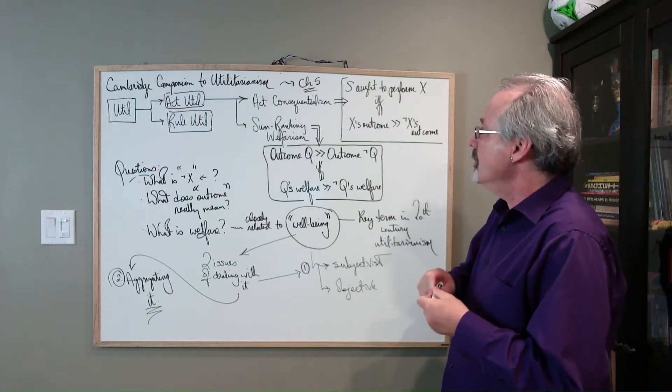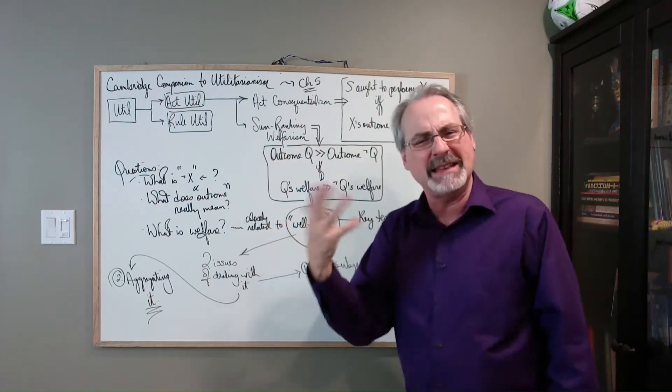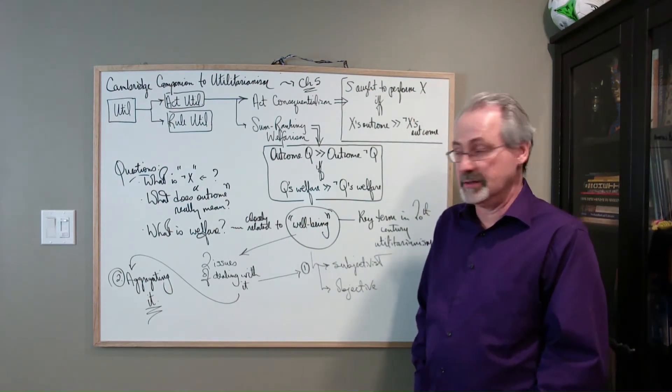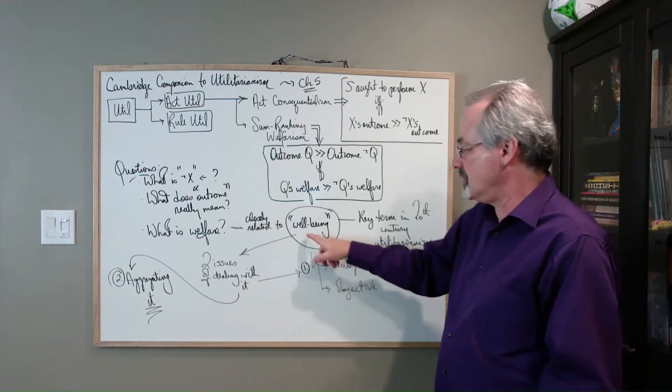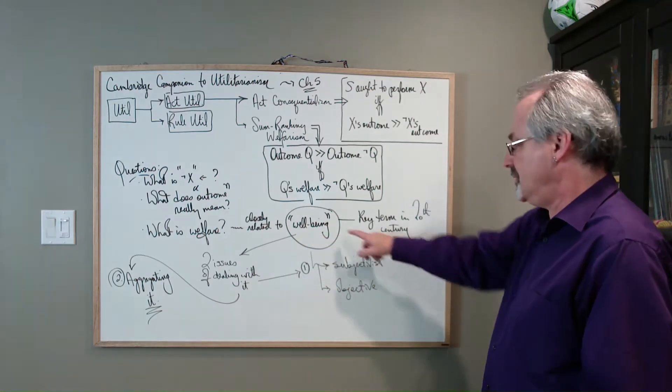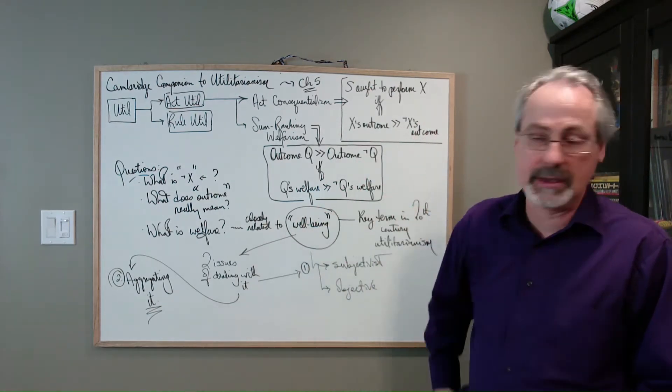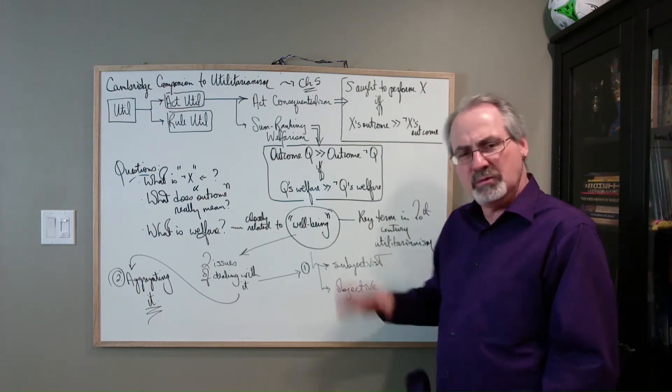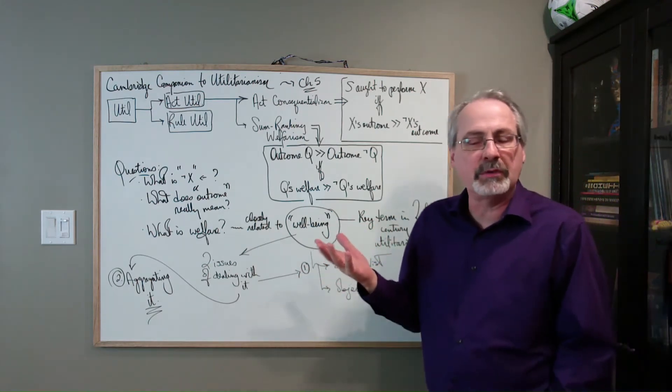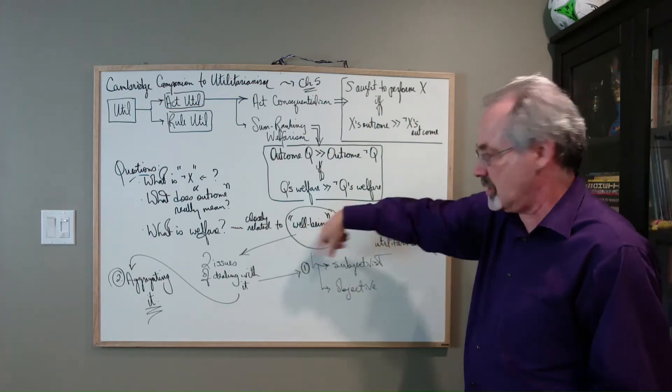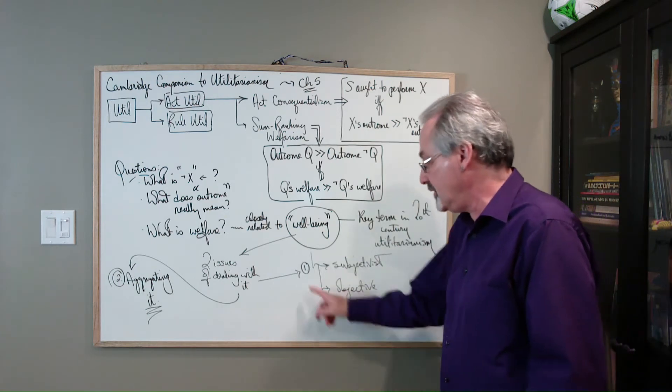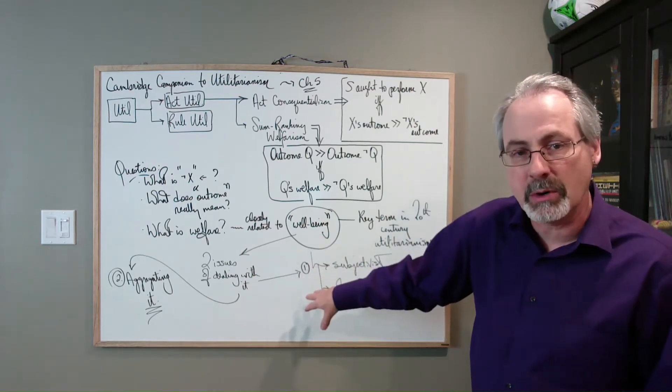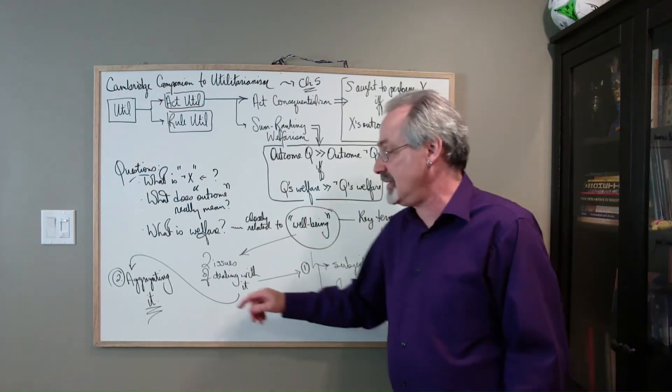And finally, when you think about welfarism, what exactly are we talking about when we talk about welfare? Well, that term in 20th century utilitarianism is closely related to this other term, well-being. This well-being is arguably one of the key terms in 20th century utilitarianism. And there's two more, but, I mean, I'm just going to talk about two issues of dealing with the term well-being. We can call the first one the problem of interpreting it, which I'm going to talk about in a moment.